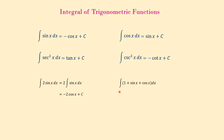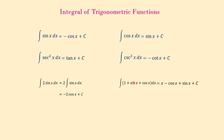Another example: the integral of (1 + sine of x + cosine of x) dx equals x minus cosine of x plus sine of x plus C. The integral of 1 is x (since the derivative of x is 1), the integral of sine of x is negative cosine of x, and the integral of cosine of x is sine of x.